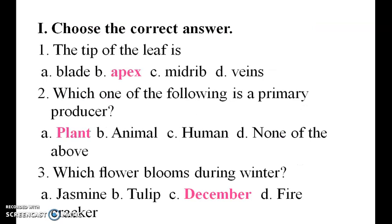Choose the correct answer. First one: the tip of the leaf is the apex. Second one: which one of the following is a primary producer? Plant. Which flower blooms during winter, in December?